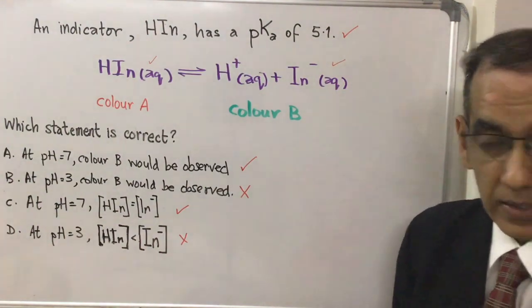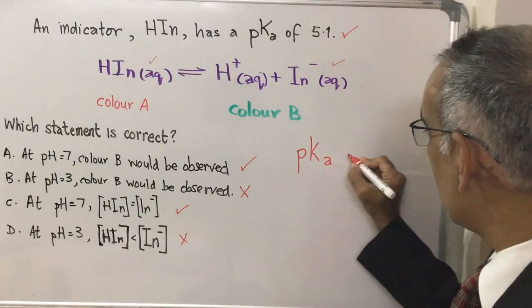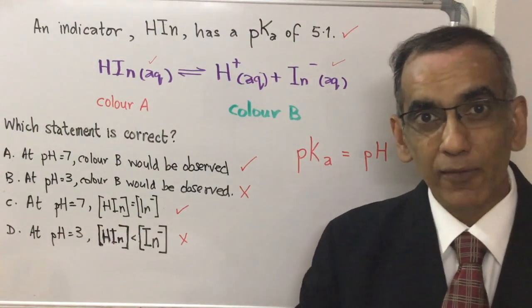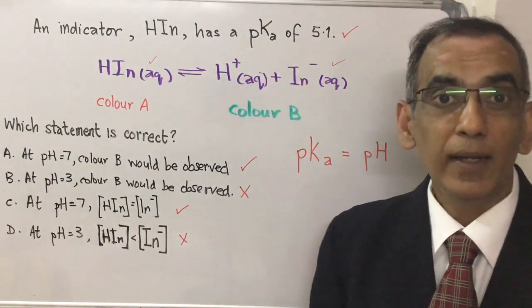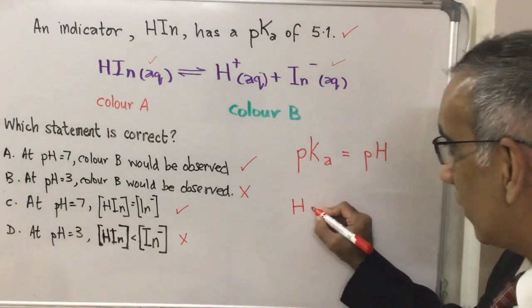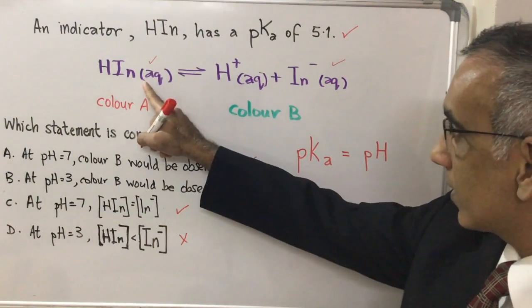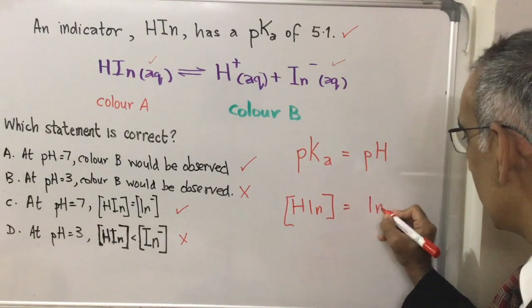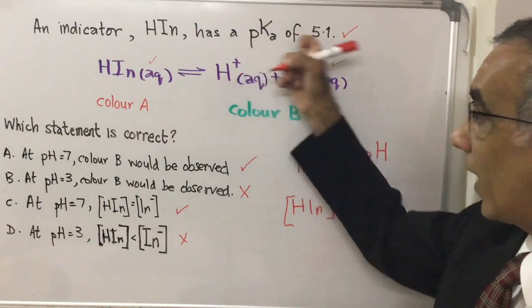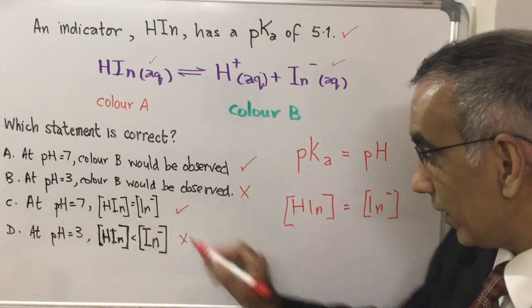You could have it memorized that pKa is equal to pH when an indicator is halfway through its color change and you could also be aware that when pKa is equal to pH that the concentration of this would be equal to the concentration of this. But pKa is 5.1 and here it suggests that the pH is 7 when this is going to happen. This is going to happen at pH 5.1.